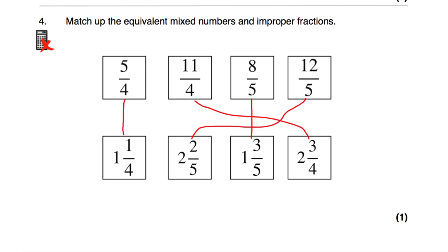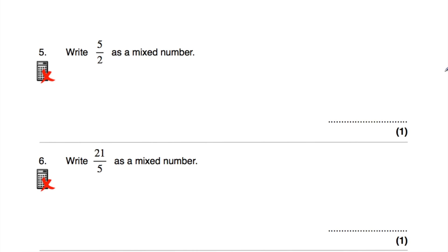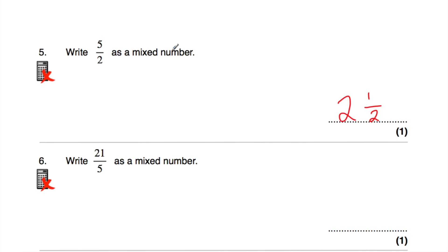Question number 5: write 5 over 2 as a mixed number. How many 2s go into 5? That would be 2 — 2 twos are 4 — with a remainder of 1. So it's going to be 2 with 1 on the numerator and 2 on the denominator — that would be 2 and a half. So 5 over 2 is 2 and a half.